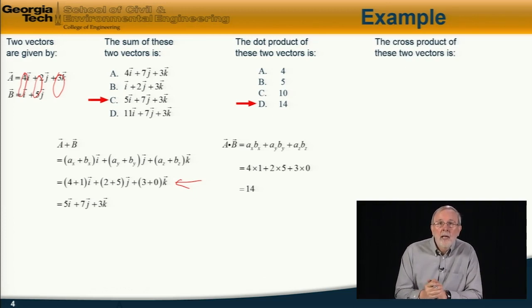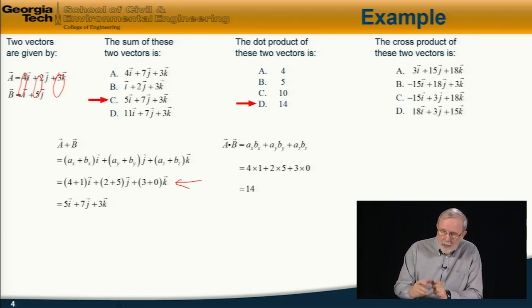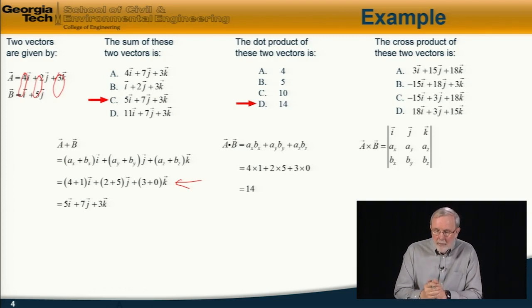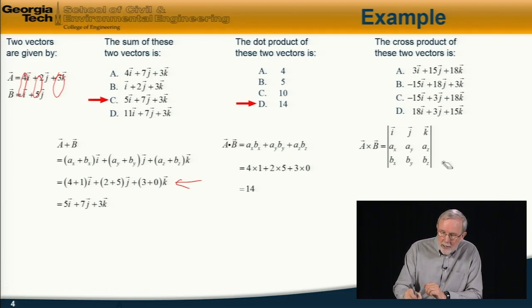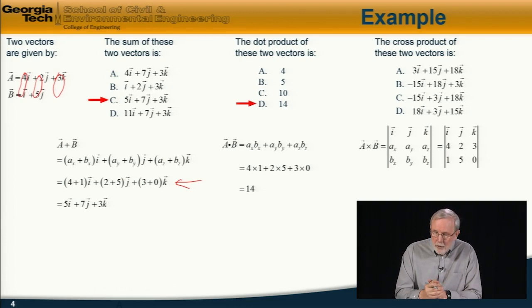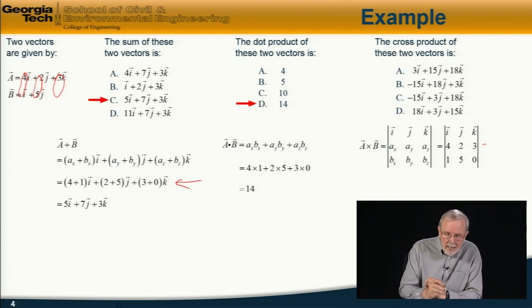And lastly, we'll compute the cross product. In other words, the vector product of those two vectors is which of these alternatives. So this one is a little bit more complicated. And we do this by writing down the determinant, i, j, k, and then the two vectors, a and b, and computing the determinant. So that is equal to the vector a is, has coefficients 4, 2, 3. And the vector b has coefficients 1, 5, and 0.